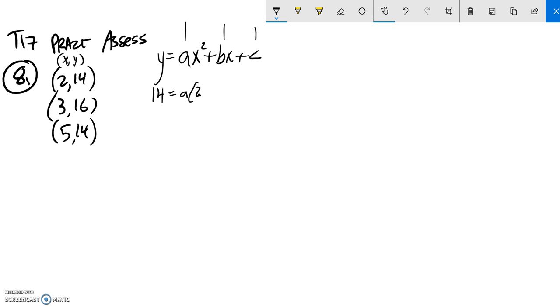A times 2 squared plus B times 2 plus C. And notice that that is the same as 2 squared is 4. So that would be 4A plus 2B plus C equals 14.